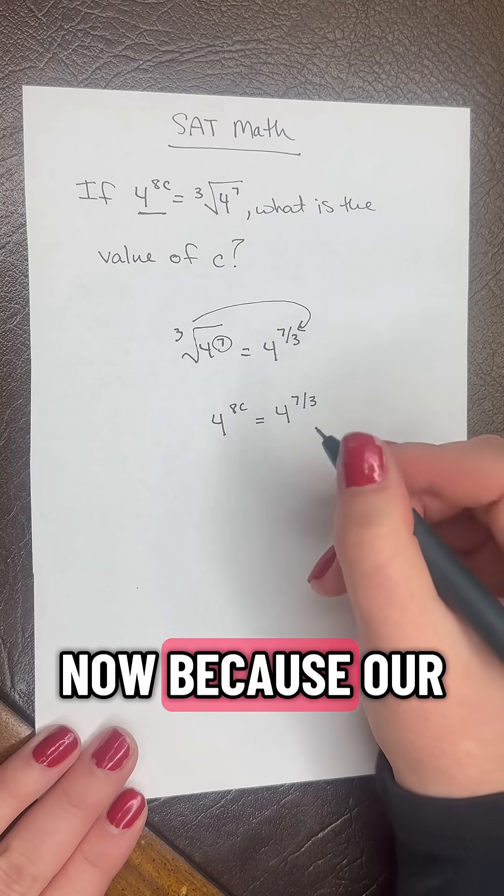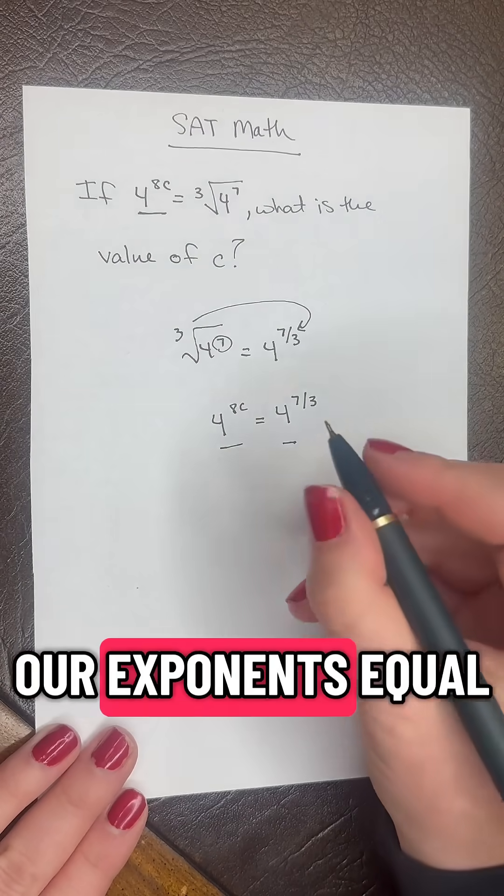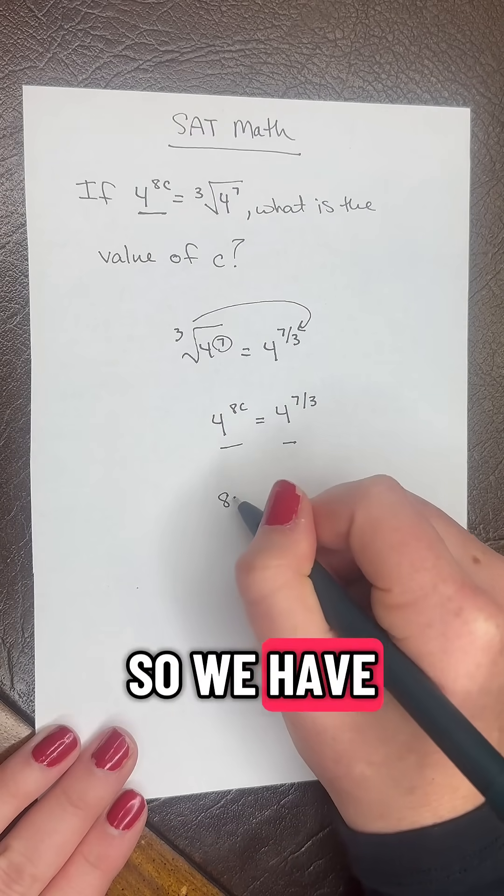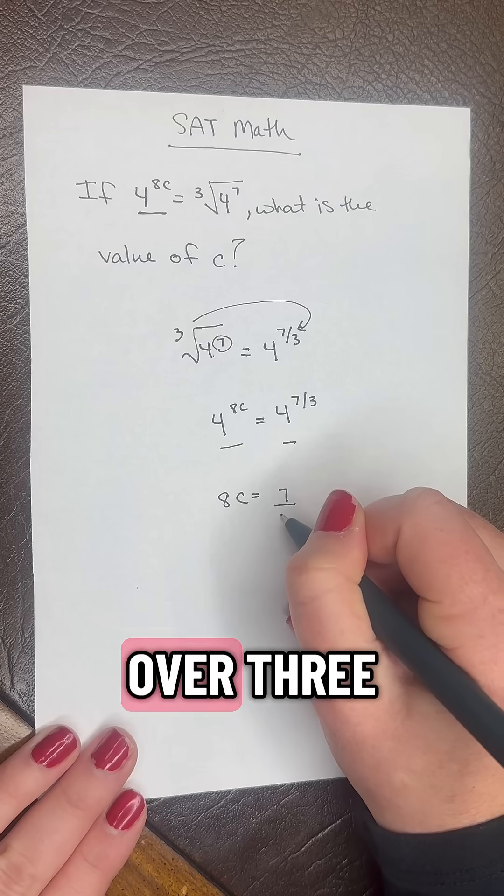Now because our bases are the same, we can set our exponents equal. So we have 8c equals 7 over 3.